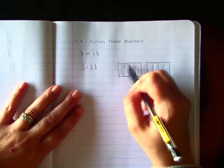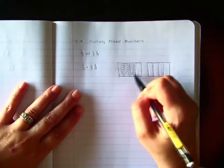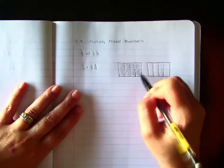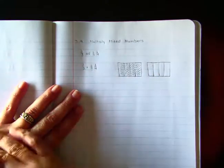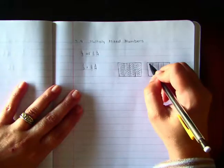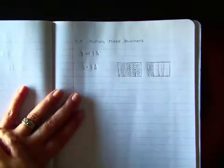So my one whole is going to be these four fourths. One-fourth, two-fourths, three-fourths, four-fourths. There's my one whole and then I have one-fourth. So there's my one-fourth.